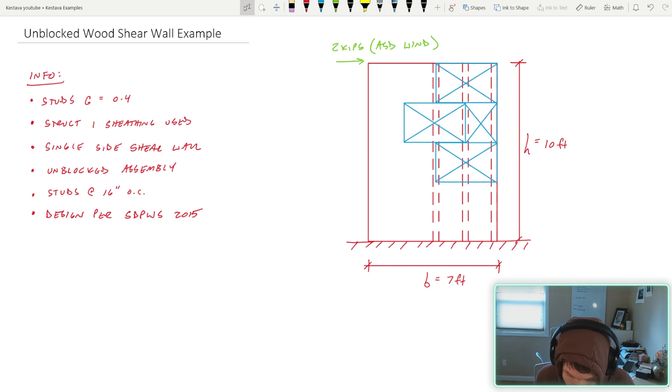We have our studs with specific gravity of 0.4, so we're going to need to watch that and adjust moving forward. We're using structural one sheathing today, single-sided wall unblocked, studs 16 inches on center, and design per the SPID WHIZ 2015 edition. The 2021 is out, but I just haven't gotten my hands on that one yet. This design example should follow in the footsteps of the updated code.